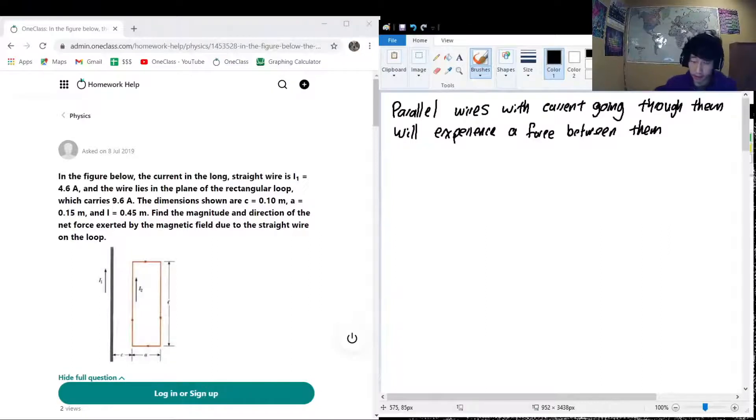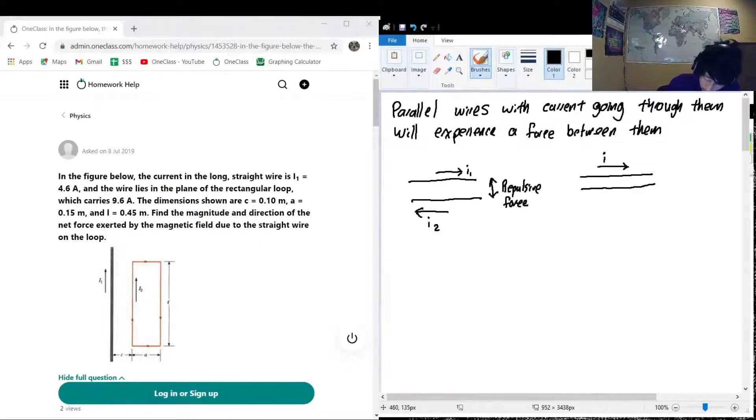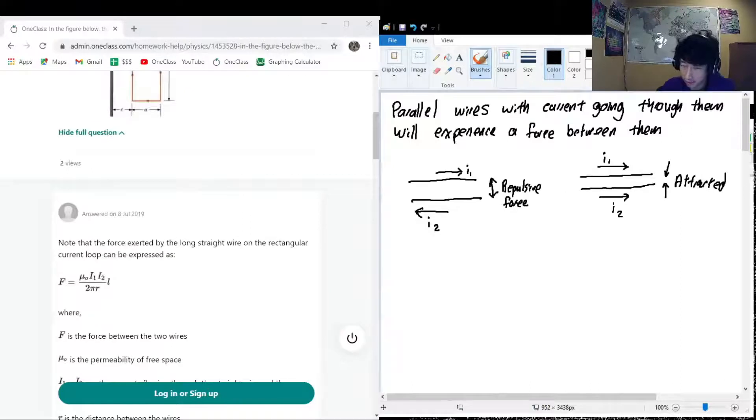Which direction is that force? If the currents are going opposite directions, like this, so here we have i1, here we have in the opposite direction i2, the force is repulsive. But if the currents are going in the same direction, they're attractive. It's kind of like, you know, think about your friendships: you get closer to people who are going in the same direction as you, you get farther from people who are going different directions from you. We want to get closer to people who are coming along our same path.